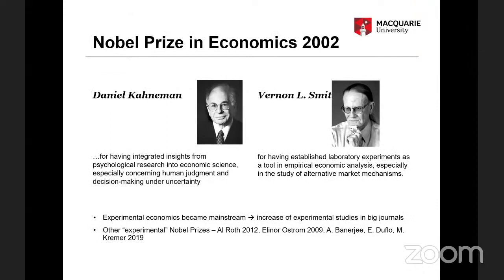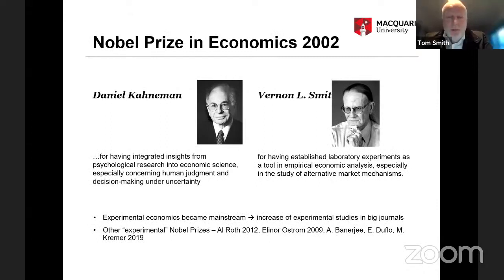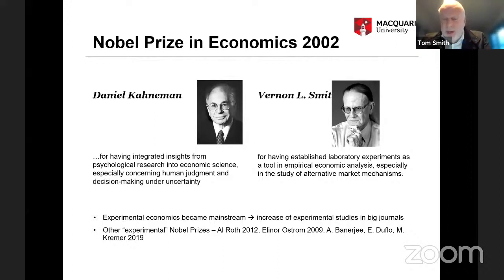A very important thing happened in 2002 when the Nobel Prize was awarded to Daniel Kahneman and Vernon Smith. They got the Nobel Prize in economics for experimental research. After this happened, experimental methods became mainstream in the economics and finance literature.